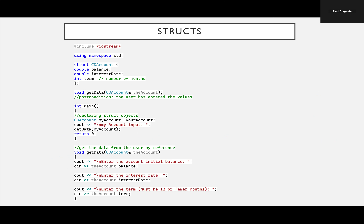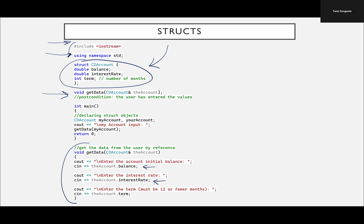This is what it looks like in placement in your program. At the top, you have your header comment and preprocessor directives, then using namespace std. Then you define your struct at the top globally. Below that are your function prototypes and function definitions, and then your main function. The struct goes at the top globally so it becomes available to all of the functions in your program. You can see here we are using the dot operator to access the fields. I'm going to demonstrate this in an actual compiler in a moment.